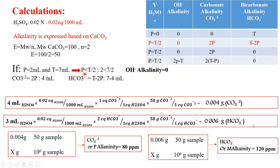Since p is less than half of t, we use the second law of the table. OH alkalinity is 0, but we have both carbonate alkalinity and bicarbonate alkalinity. For carbonate alkalinity, we use 2p: p is 2, so 2p is 4 — meaning 4 mL of acid. For bicarbonate, it is T minus 2p: 7 minus 4 equals 3 mL of acid used for titration of bicarbonate.